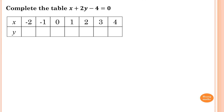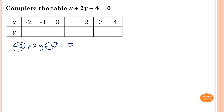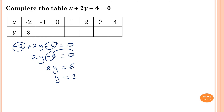For this equation, you have two ways to complete the table. One way is to substitute the x value in and solve for y. When x equals negative 2, substituting gives minus 2 plus 2y minus 4 equals 0. So 2y minus 6 equals 0, and solving gives y equals 3.